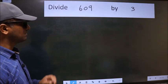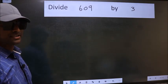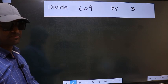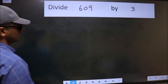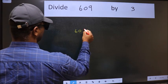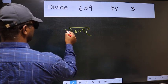Divide 609 by 3. To do this division, we should frame it in this way. 609 and 3 here.